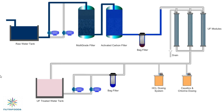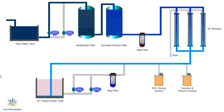Ultrafiltration is commonly used in various industries including the food and beverage industries, pharmaceutical, and wastewater treatment plants. In the food and beverage industry, ultrafiltration is used to remove impurities and improve the quality of products.